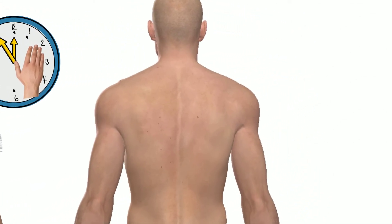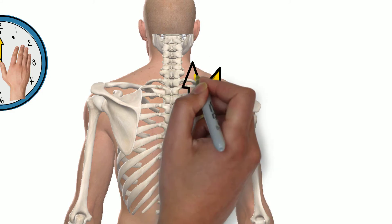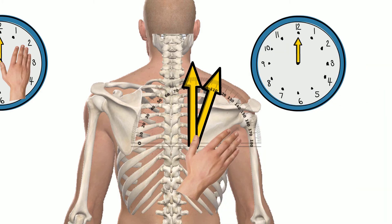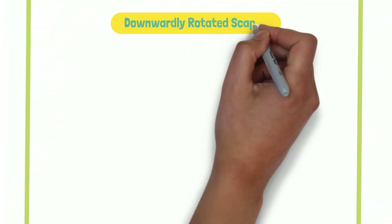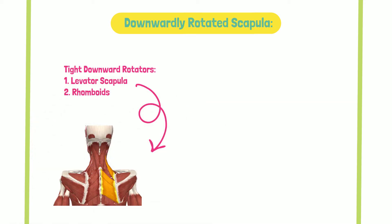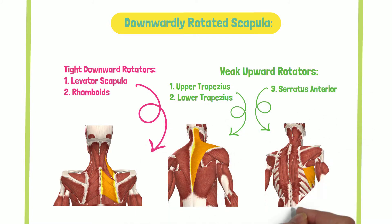Abnormal alignment in this case is a downwardly rotated scapula. Note the position of the thumb — this vector is pointing to 1 o'clock, indicating a downwardly rotated scapula. Tightness in the downward rotators, such as levator scapulae and rhomboids, may result in the scapula's downward alignment. Weakness can also be a culprit — for example, in the upward rotation force couple, such as the upper trapezius, lower trapezius, and serratus anterior.